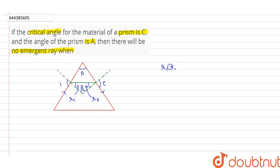R1 plus R2 is equal to A, and to be able to enter the prism R1 should be less than or equal to C. And now for exit, R2 should be less than or equal to C.